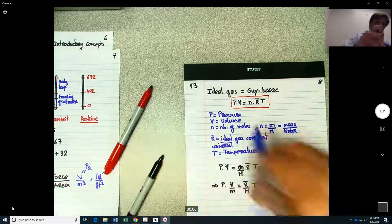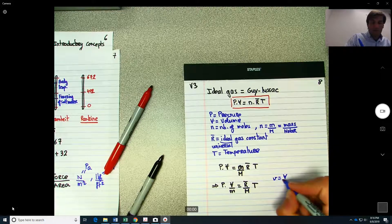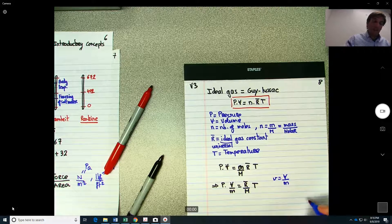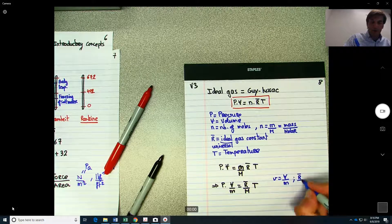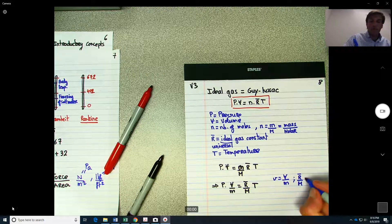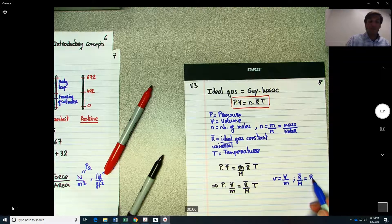So from the previous page, remember specific volume would be volume divided by M. And here, this is new, but generally the R bar over M, so the universal gas constant divided by the molar mass, will be the gas constant for the specific gas.